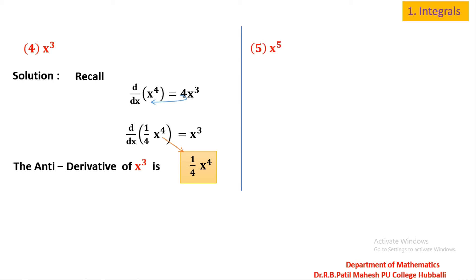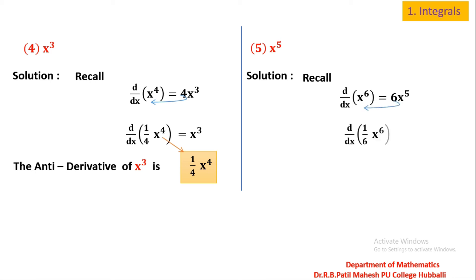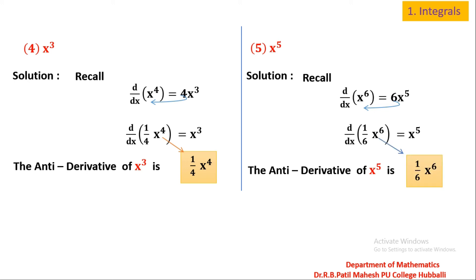Question number 5: x⁵. Find the anti-derivative of x⁵. Recall d/dx of x⁶ — if you differentiate x⁶ you get 6x⁵. I want only x⁵, so taking 6 to the left side: d/dx of (1/6)x⁶ is equal to x⁵. So the anti-derivative of x⁵ is (1/6)x⁶.